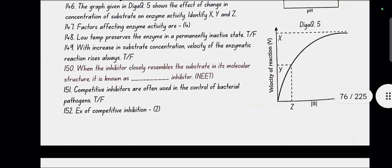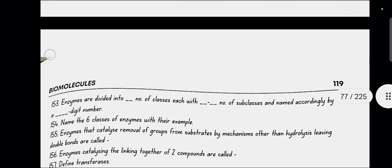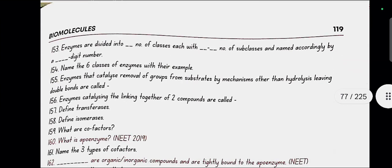When the inhibitor closely resembles the substrate in its molecular structure, it is known as competitive inhibitor. Competitive inhibitors are often used in the control of bacterial pathogens. Example: the inhibition of succinic dehydrogenase by malonate. Sulfa drugs for inhibition of folic acid synthesis in bacteria. Enzymes are divided into 6 classes with 10 to 30 number of subclasses and named by a 4 digit number.